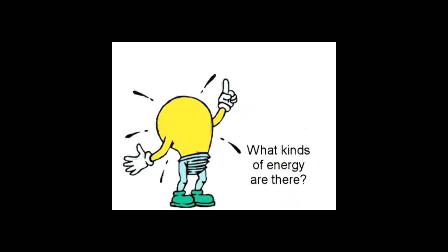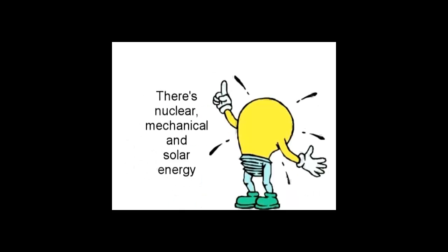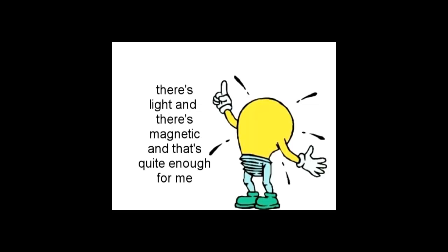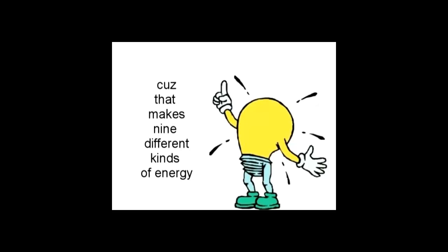What kinds of energy are there? There's nuclear, mechanical, and solar energy, and electrical, and chemical, and radiant, and heat. There's light and there's magnetic, and that's quite enough for me, cause that makes nine different kinds of energy.